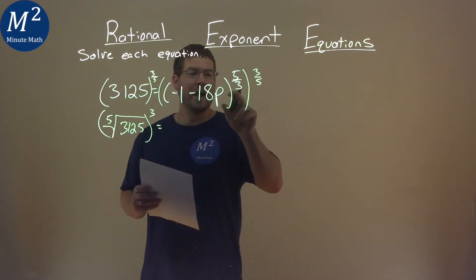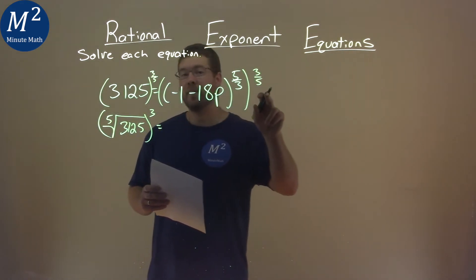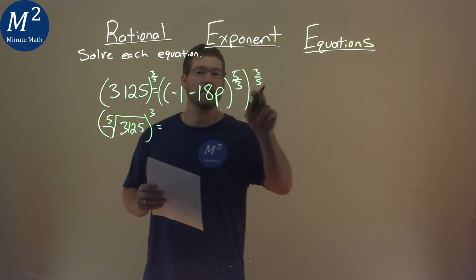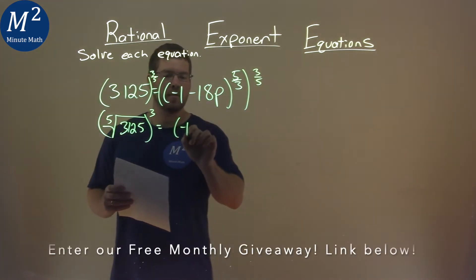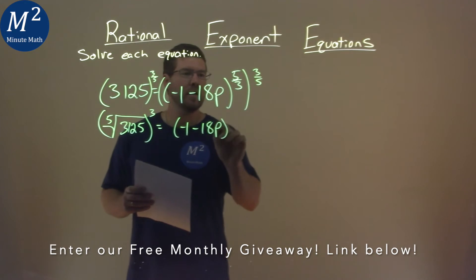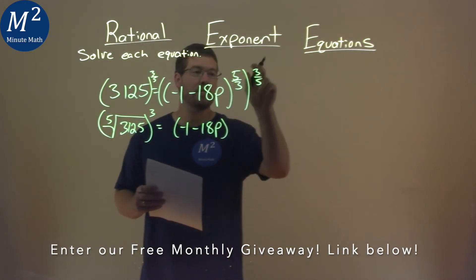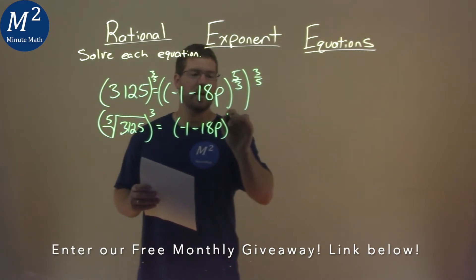When we take an exponent, five-thirds, and we raise it to the three-fifths, we multiply these exponents. So, negative one minus 18p is now raised to the five-thirds times three-fifths, which is one.